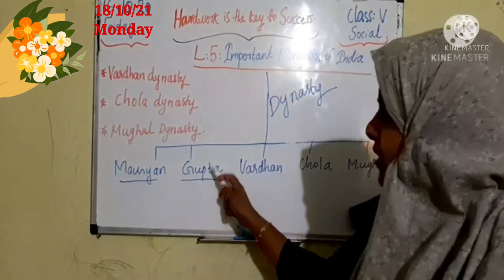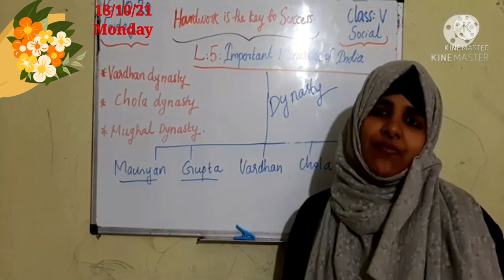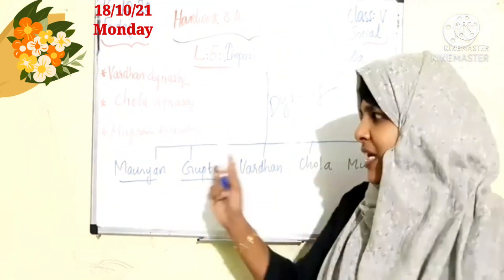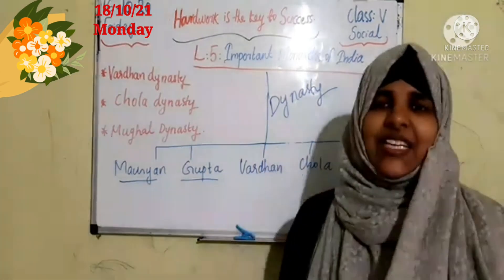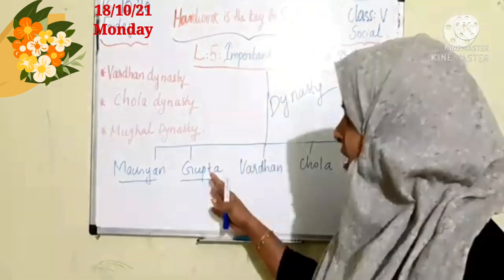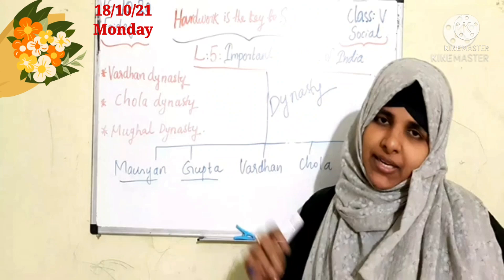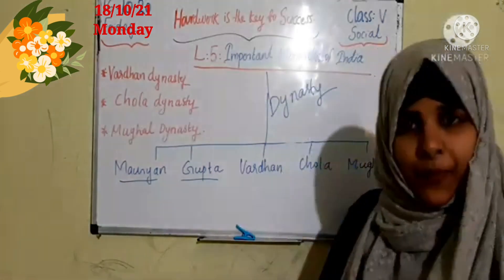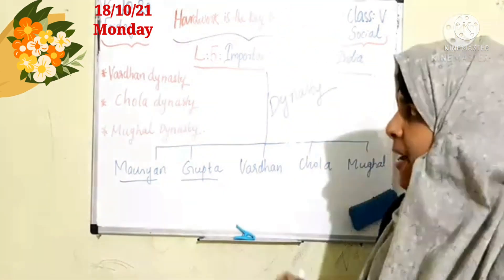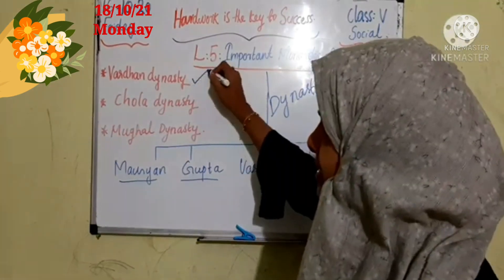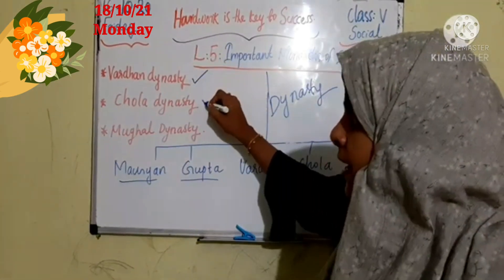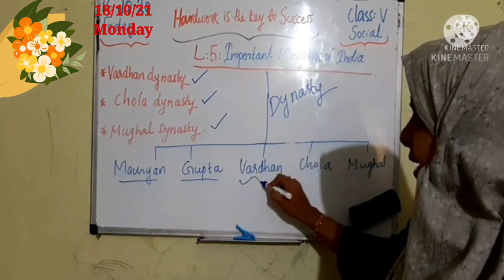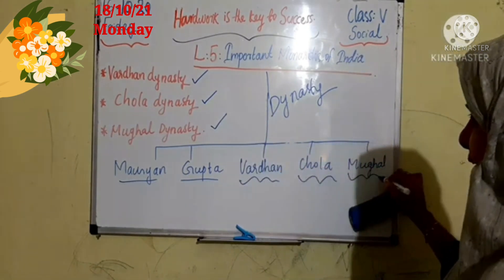Very good. Then what about Gupta dynasty, children? The Gupta dynasty is related to the name Chandragupta — that is Chandragupta II. He was the ruler of the Gupta dynasty. And today I am going to discuss with you about Vardhan dynasty, Chola dynasty, and Mughal dynasty. So we can learn these three in detail.